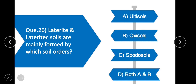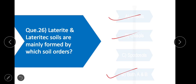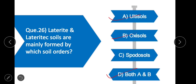Question 26: Laterite and lateritic soils are mainly formed by which soil orders? Option D is correct — both A and B. Laterite and lateritic soils are formed by both Ultisols and Oxisols combined.